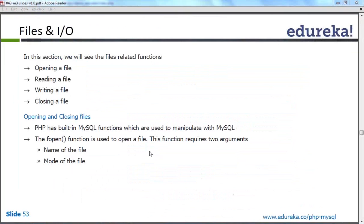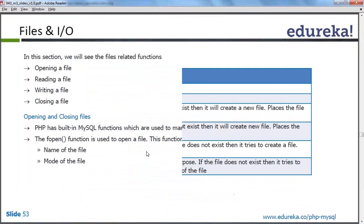There is a difference between writing and appending. Writing simply means if we write a file using write mode, it will overwrite all the contents. But if we open the file in append mode, then it will append the new data to the previous data — it will not overwrite. So, this is the difference.